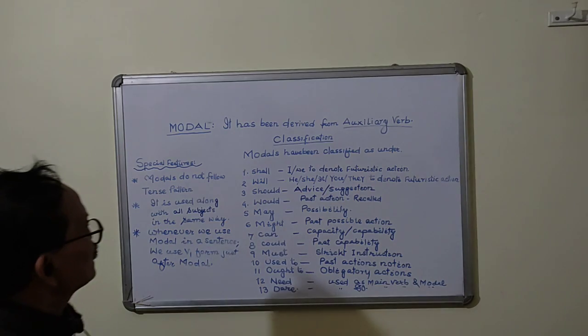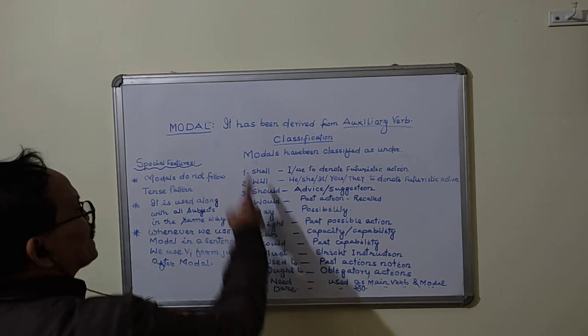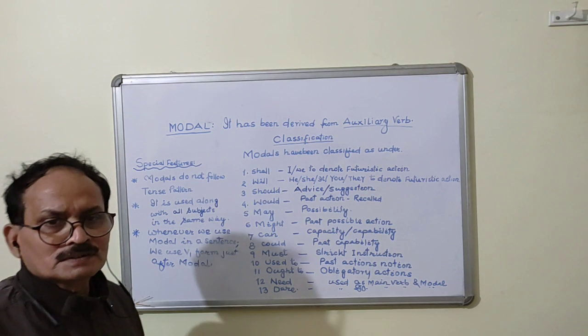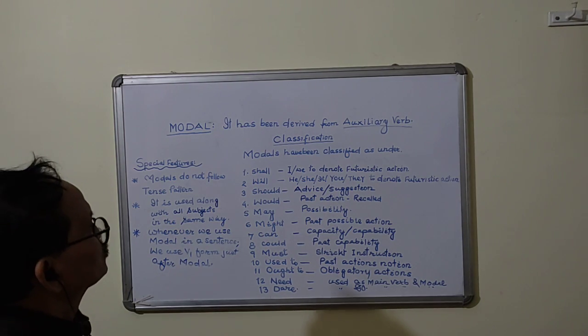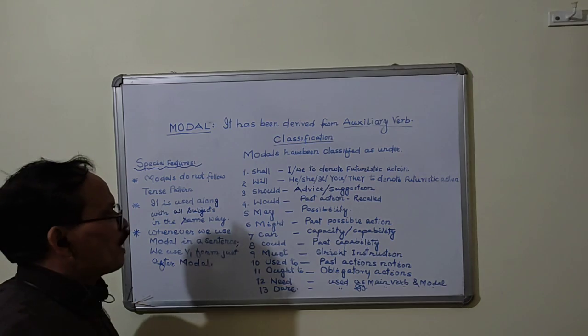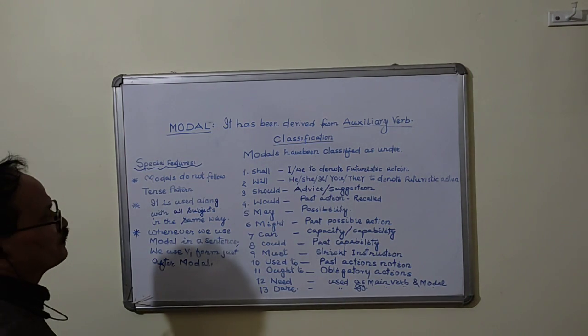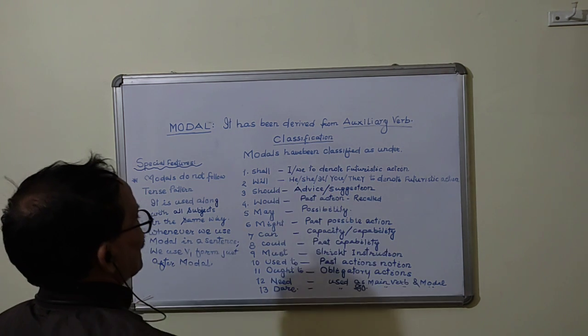The definition of model is here. It has been derived from auxiliary verb. Models have been classified under the phase of classification which has been written as under.